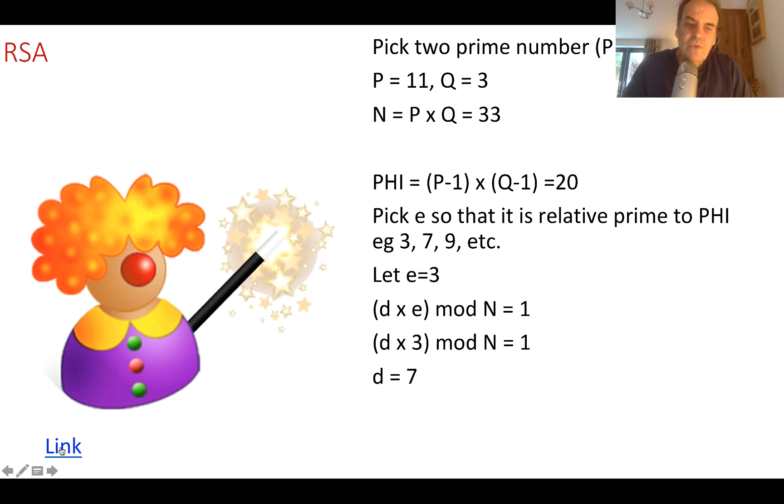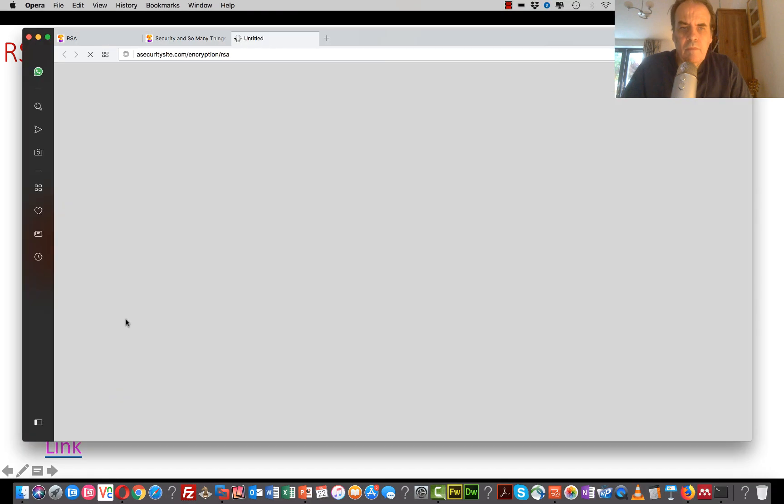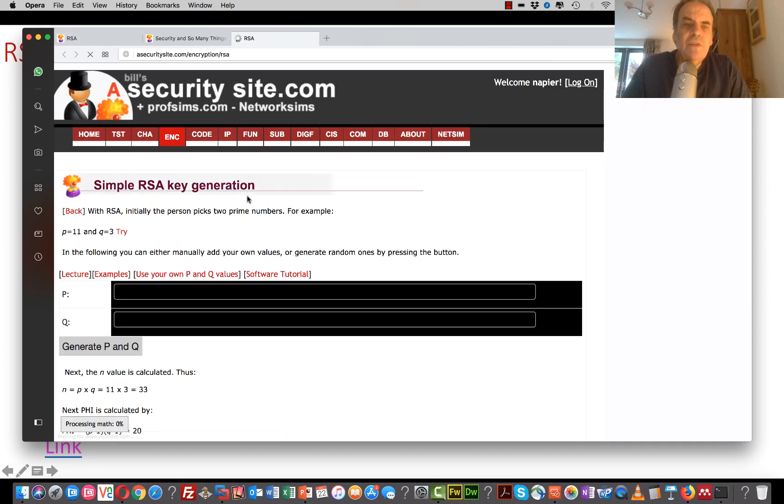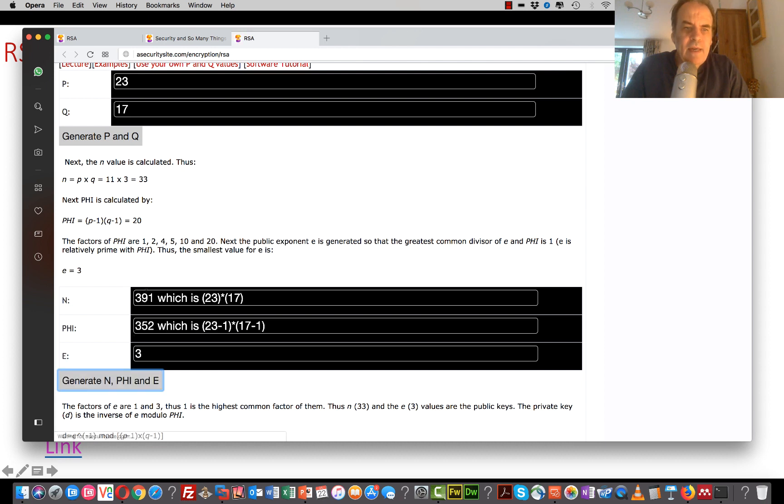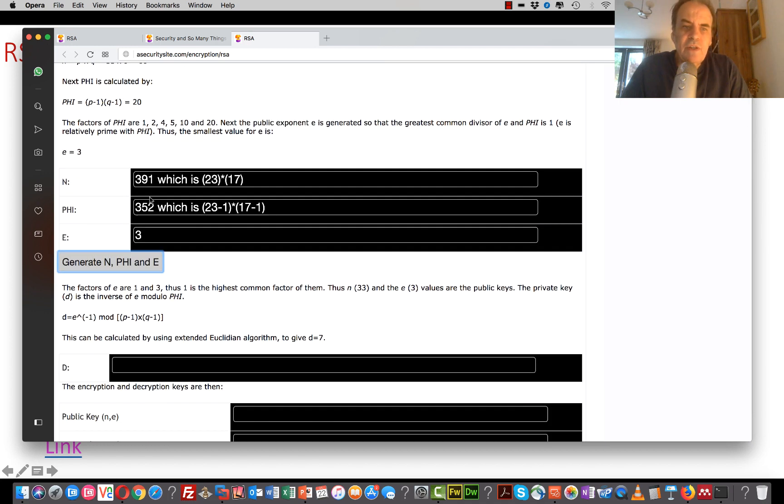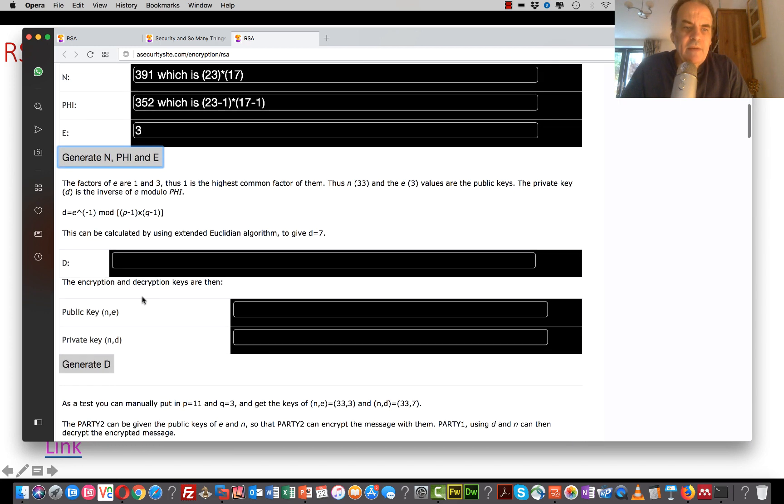If you want, you can go through some different values. Okay, so we can try a few values here. So there's a P and Q value. We can work out N from there. And there's phi. We pick a value of 3, which does not share a factor with phi.